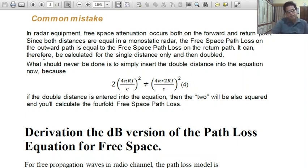Common mistake in radar equipments. Free space attenuation occurs both on the forward and return path. Since both distances are equal in a monostatic radar, the free space path loss on the outward path is equal to the free space path loss in the return path. It therefore be calculated for single distance only and then doubled. What should never be done is to simply insert that double distance into the equation because 4 pi rf upon c all square not equal to 4 pi into 2 rf upon c all square. If the double distance is entered into the equation then the 2 will be also squared and you calculate the 4 fold free space path loss.